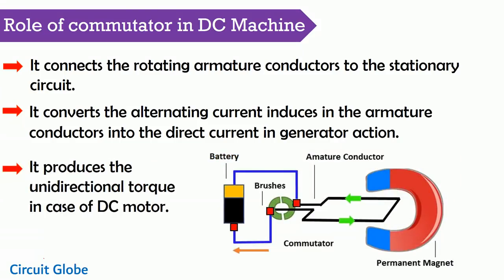The role of commutator in DC machine: commutator is used for connecting the rotating armature conductor to the stationary circuit. Here you can see in this image, the armature conductor is continuously rotating under the magnetic field. If we want to connect this armature conductor to the external stationary circuit, then we are using the commutator along with the brushes. By the help of commutator and brushes, we connect the rotating armature conductor to the external circuit.